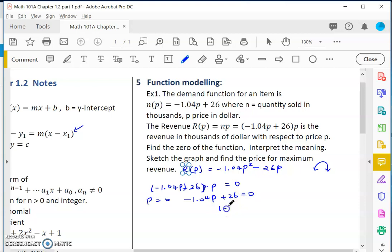So that would be p equals zero, or negative 1.04p plus 26 equals zero. This just means 1.04p equals 26. So p would be 26 divided by 1.04, and if I put in the calculator that is 25. So we have two prices: price 0 or price 25.